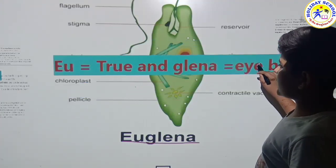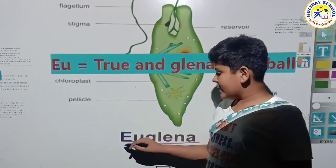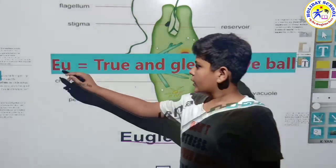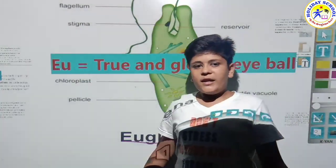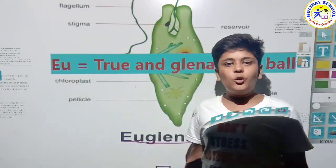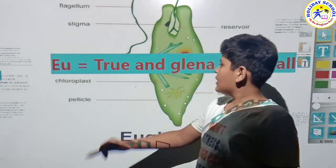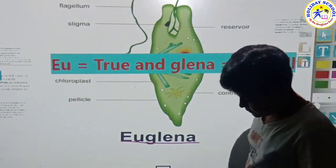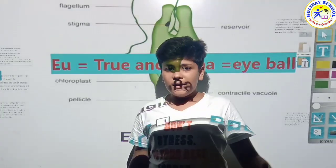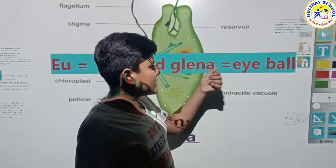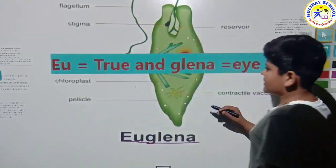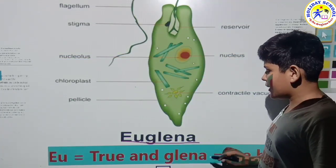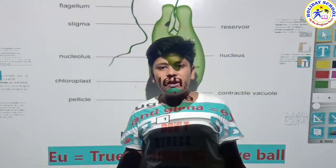You can see here that 'U' means true. In the German language, 'U' is known as true and 'Ligena' is known as eyeball. So Ligena is known as eyeball. This is the word formation of Euglena.